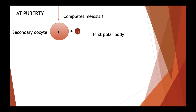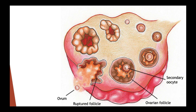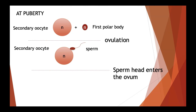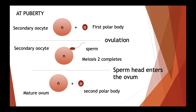Then meiosis II starts, but this stops at metaphase. So the secondary oocyte released at ovulation is stopped at metaphase II. If a sperm penetrates the secondary oocyte, meiosis II completes and the secondary oocyte divides into a mature ovum and a secondary polar body, which degenerates. If a sperm penetrates, there is a single mature ovum containing a sperm head at the end of oogenesis.